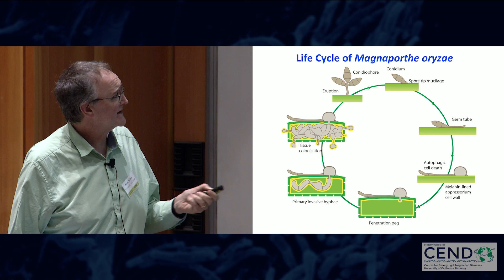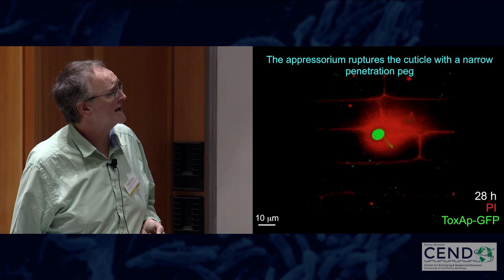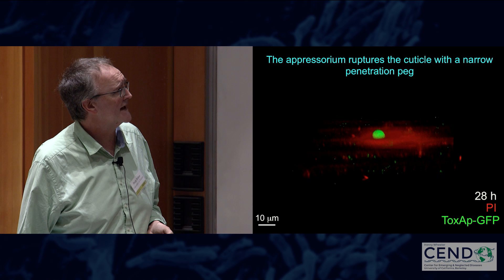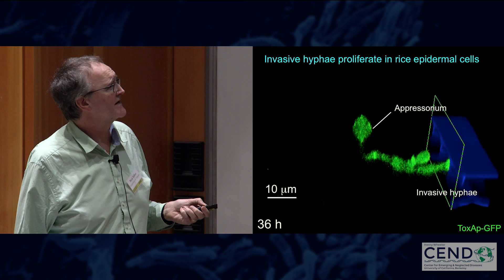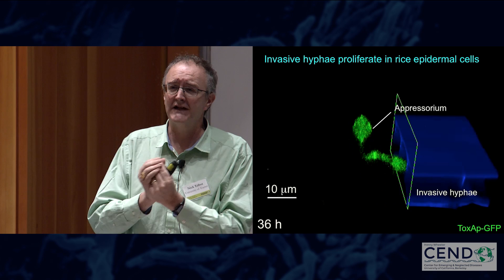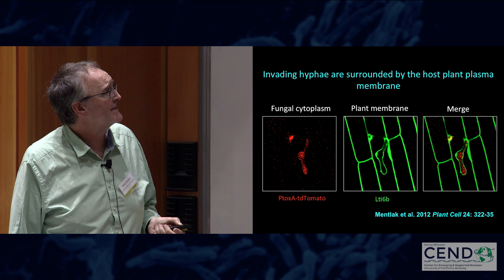Here's an appressorium. If we lift the rice tissue, you can see the penetration peg entering the underlying epidermal cell. Those invasive hyphae then change in terms of their shape — they become bulbous, branched cells and actually undertake a pseudo-hyphal type of growth, growing with a budding phenotype rather than the classical filamentous hyphae we see when we grow the fungus in culture.